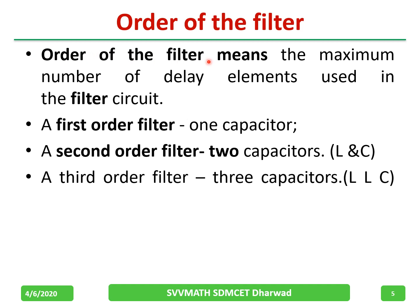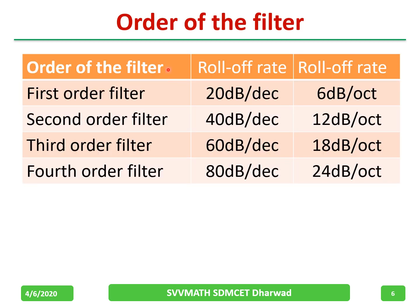The order of the filter means the maximum number of delay elements used in that filter circuit. A first-order filter uses one capacitor; a second-order filter uses two capacitors or one inductor and one capacitor; a third-order filter uses three capacitors or two inductors and one capacitor. The roll-off rate is 20 dB per decade for first order, 40 dB for second, 60 dB for third, and 80 dB per decade for fourth order.